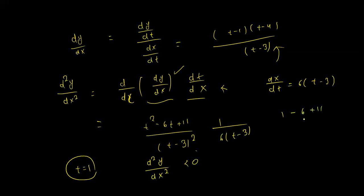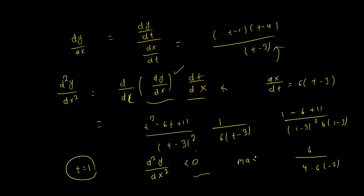Evaluating the numerator gives terms like 1 - 6 + 11, and (t - 1 - 3)² gives (1 - 3). After calculation, multiplying by 6 gives a result less than 0, which means it will be a maximum at that critical point.